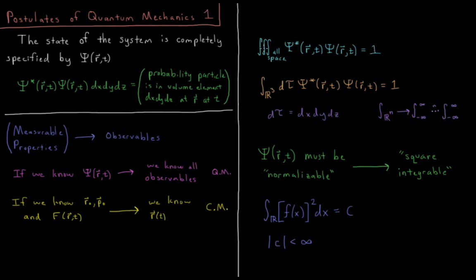We could also replace this integral, this triple integral over all space by this symbol here. This r with the extra slash by it indicates all real numbers, means negative infinity to infinity, and the cubed meaning in three dimensions. So in x, y, and z, we're integrating from minus infinity to infinity, d tau in this case being dx, dy, dz, our volume element, d tau. So similarly there, integral over all space in three dimensions, psi star psi is equal to one.